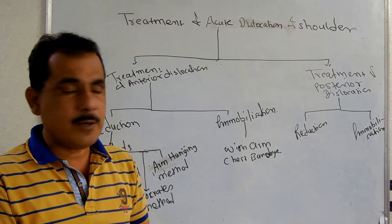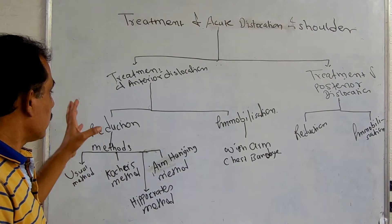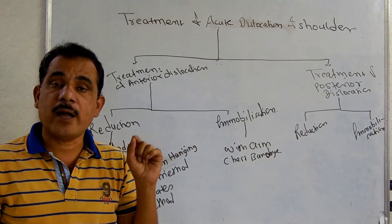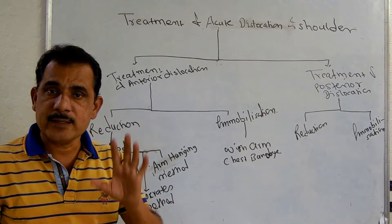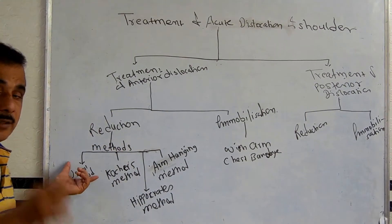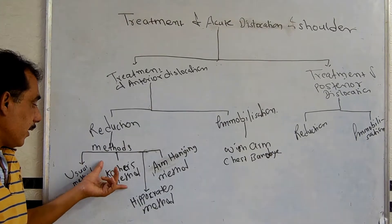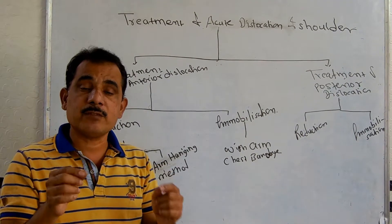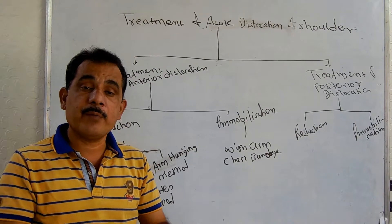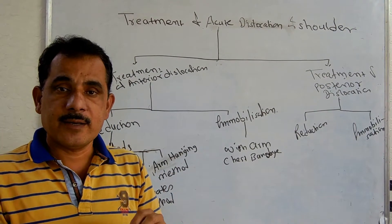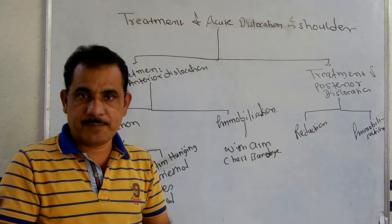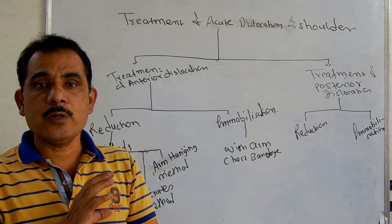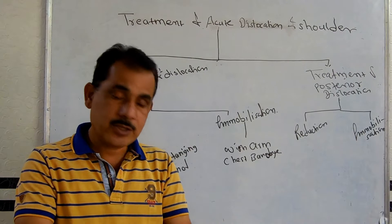The second method is Kocher's method, which is the most popular method used by a number of surgeons. Many surgeons can reduce the dislocation without anesthesia using this method. First, the surgeon holds the hand of the patient at the wrist with one hand, then fixes the arm to the chest with medial rotation.